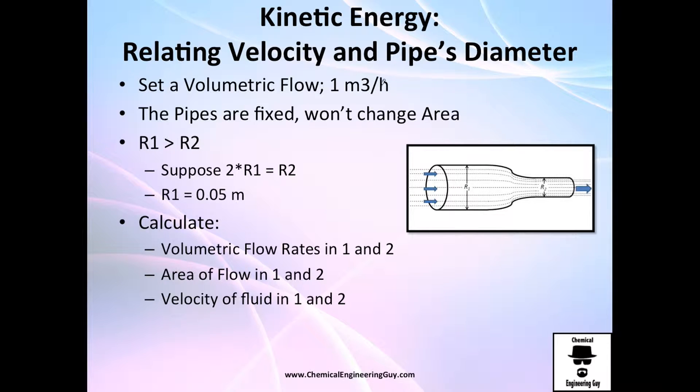Let's set a volumetric flow of one cubic meter per hour. Pipes are fixed, that means the area won't change. They are metal, steel, solid steel. So radius one of course is bigger than radius two. And just for the sake of this example, let's assume that this is twice as big as this one here. And let's assume R1 is 0.05 meters and R2 by definition will be the double, which is 0.10.